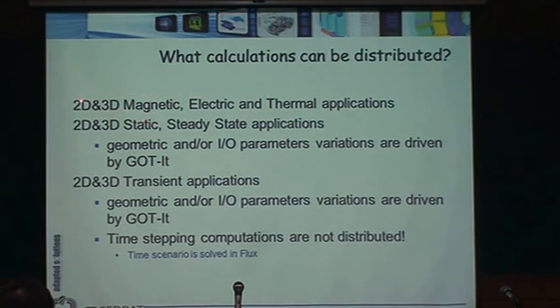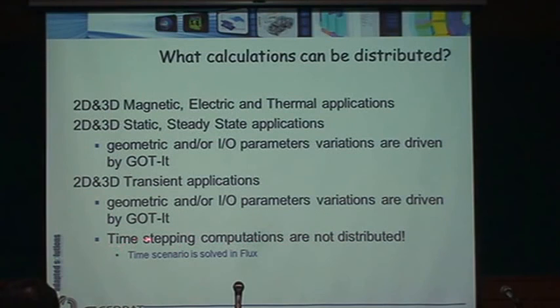The distributed computing is applicable to 2D and 3D magnetic, electric, and thermal applications — both static and transient. It is not available for coupled multi-physics solutions like magneto-thermal. Also, time-stepping computations are not distributed — it doesn't make a single transient solve faster. What it does is make multi-parameter studies — screening, optimization, genetic algorithms — go much faster.